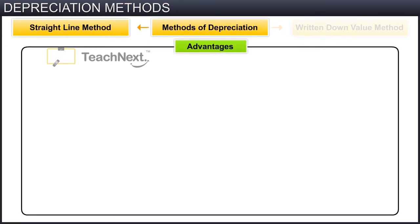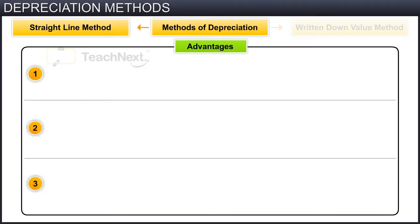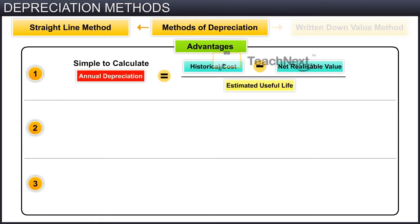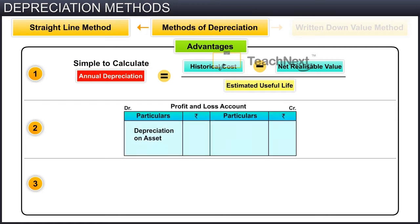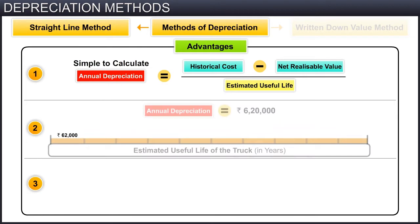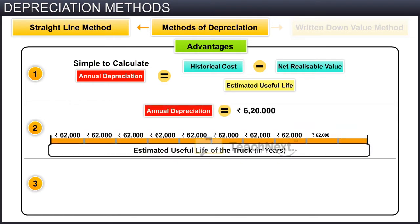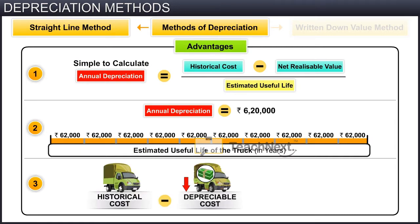Due to numerous advantages, this method is widely used in practice. The prime advantages are: it is very simple to calculate the depreciation amount, and easy to understand and apply. The depreciation amount charged to the profit and loss account remains constant, which makes it easy to compare profits of different years. This method also depreciates the full depreciable cost of the asset to its net realizable value.